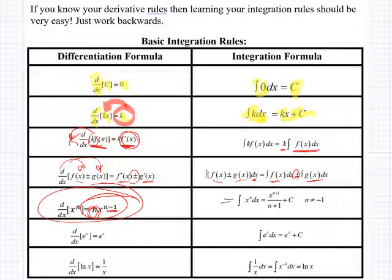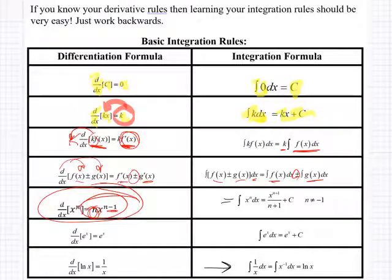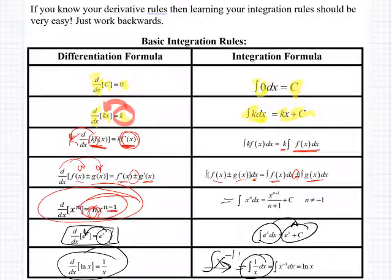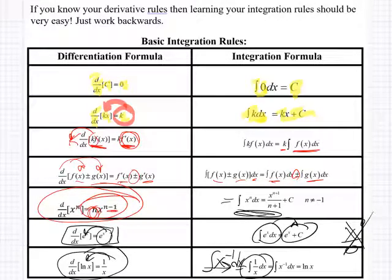This is our power rule for integration: add one to the power and divide by the new power, then plus c. Note that n can't equal negative one — if n were negative one, you'd have x to the zero over zero, which doesn't work. If n is negative one, that's the same as the integral of 1/x dx. The integral of e to the x is e to the x plus c. And since the derivative of ln x is 1/x, the integral of 1/x gives us the natural logarithm plus c.